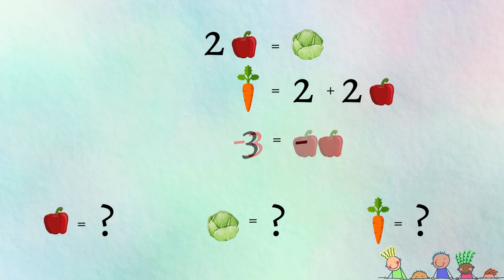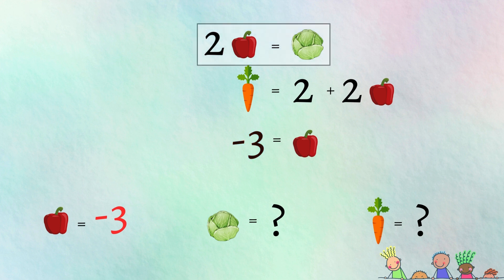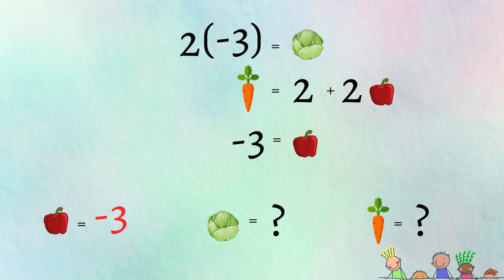Now we simply solve for the bell pepper which after a bit of math we find out is equal to negative three. Awesome, now it's downhill from here. Knowing what the bell pepper is, we can solve for the cabbage using the first equation. Two times negative three means the cabbage is equal to negative six.